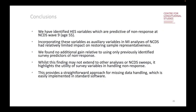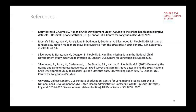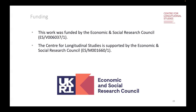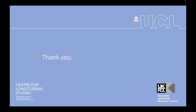In conclusions: we identified HES variables which are predictive of non-response at wave nine when cohort members are 55 years old. We've incorporated these as auxiliary variables in the multiple imputation analysis, but it has had relatively limited impact in restoring sample representativeness — we didn't find an additional gain relative to using only the survey predictors that CLS already has. Whilst this finding may not extend to other analyses or NCDS sweeps, it does highlight the utility of survey variables in handling non-response, which is quite useful because survey variables are much easier to obtain than going through the NHS Digital process of obtaining licences and training, and are easily implemented in standard software. In this analysis we used R. This work was funded by the ESRC and the CLS ESRC grant. Thank you very much for listening.